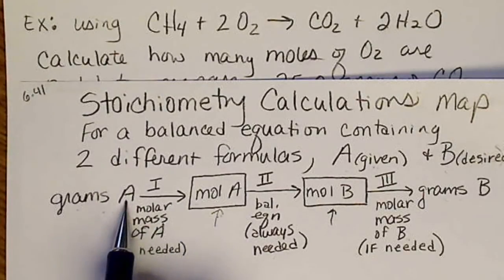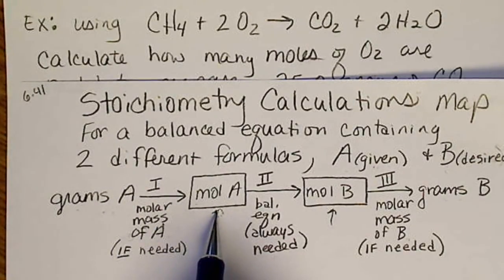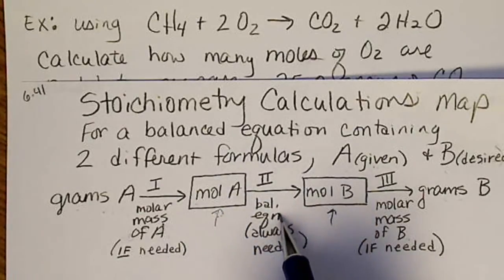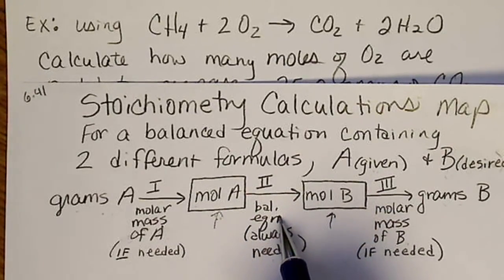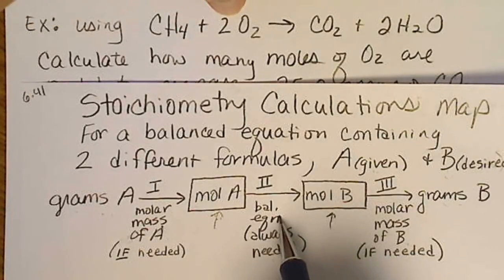if we're given grams of carbon dioxide, we're going to use the molar mass to convert to moles of CO2. Then we're going to use the balanced equation to go from moles of CO2 to moles of O2.